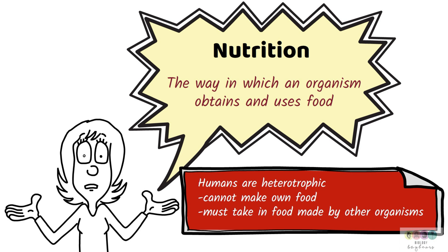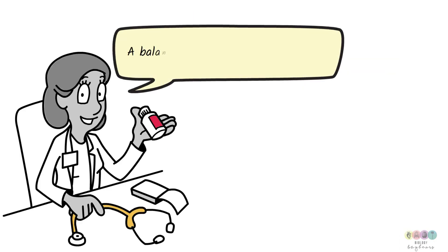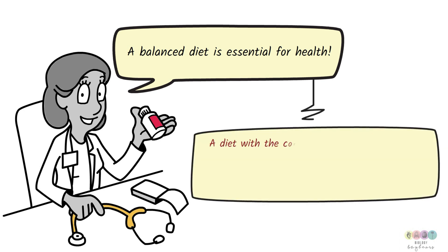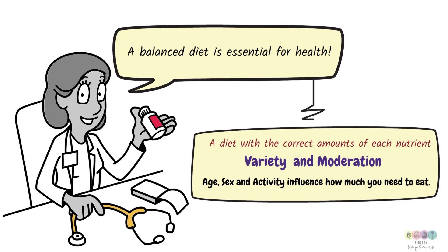Food is really important for health and a balanced diet is essential for health. You must be able to explain what it is. It's a diet with the correct amounts of each nutrient. And when you consider a balanced diet, you have to include variety and moderation. A person's age, sex and activity level will influence how much they will need to eat. That's very important to consider as well.